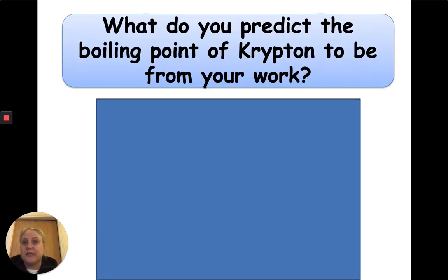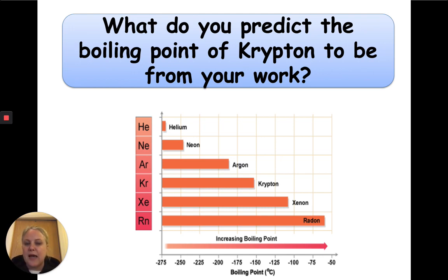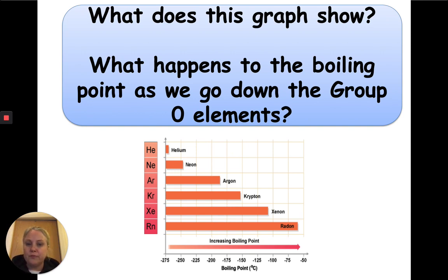Let's try some predictions now. What do you predict the boiling point of krypton to be? Krypton has a low boiling point still, but it is higher than helium. The krypton boiling point is approximately minus 155 degrees Celsius. So what happens as we go down the group? Their boiling points increase as you go down the group. They still have boiling points far below room temperature — don't forget room temperature is about 21 degrees Celsius.